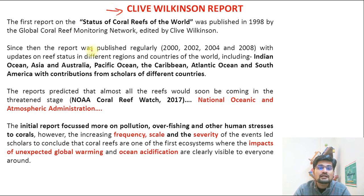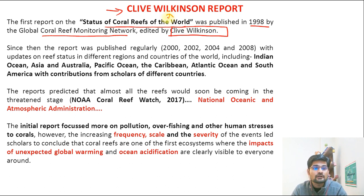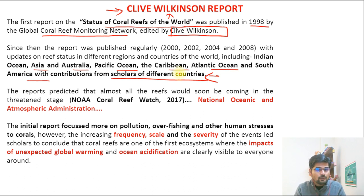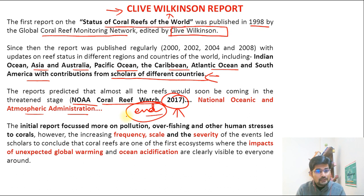The first report on the status of coral reefs of the world was published in 1998. It is produced by the Global Coral Reef Monitoring Network and was edited by scientist Clive Wilkinson — hence known as the Clive Wilkinson report. The report was published regularly until 2008 and covers the Indian Ocean, Asia, Australia, Pacific Ocean, Caribbean, Atlantic Ocean, and South America with contributions from scholars of various countries. The reports predicted that almost all reefs would soon reach a threatened — or endangered — stage, and the NOAA Coral Reef Watch report of 2017 stated that the end is near.